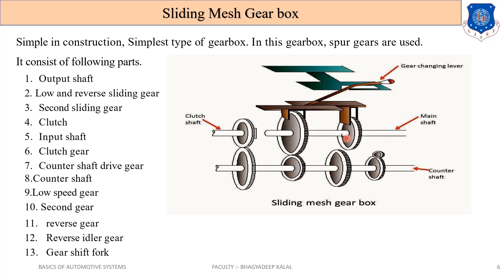Now when we apply second gear, we first use de-clutching so the gear comes to neutral condition. The gear moves in that direction, and by using the second selector mechanism, this gear comes into contact with the second gear. RPM increases and torque reduces because the size of the lay shaft gear for second gear is less compared to the main shaft gear.